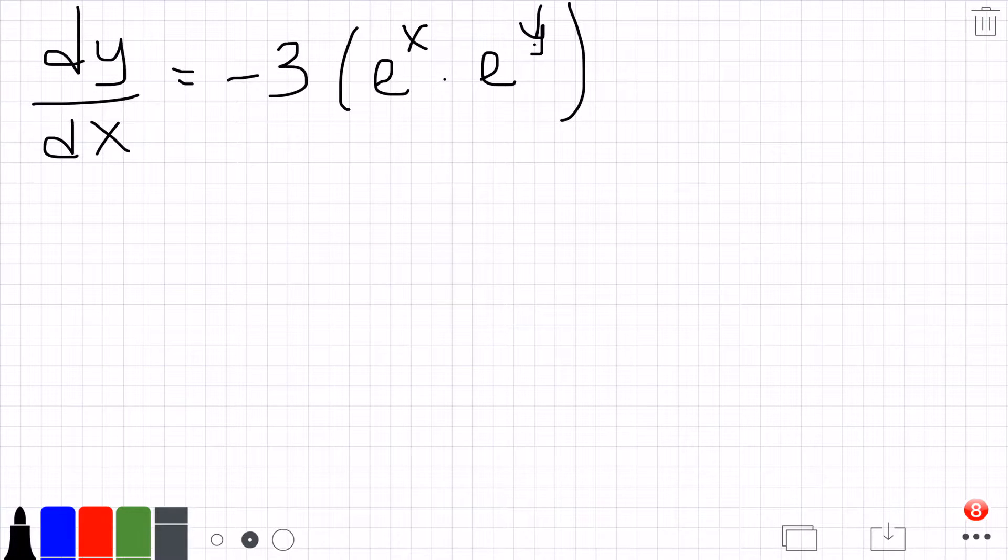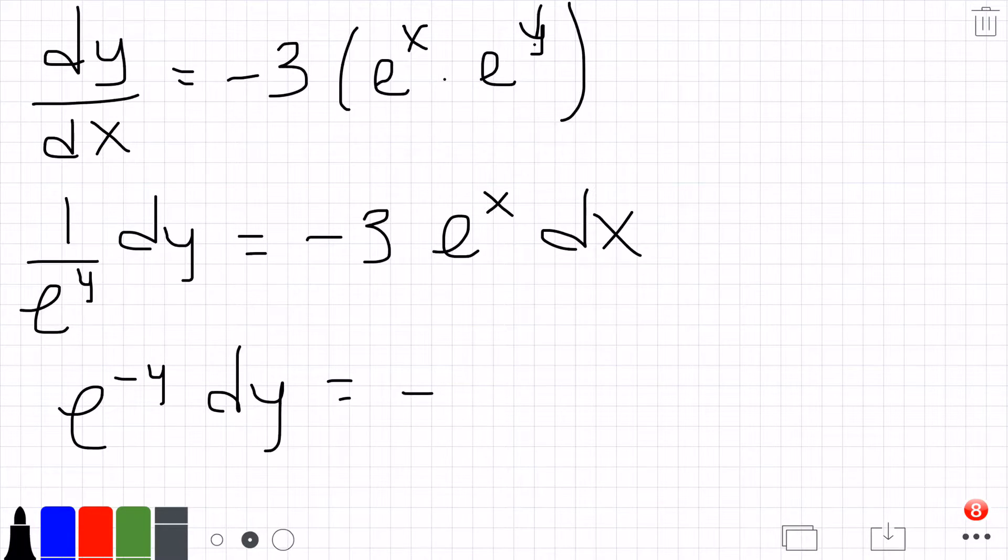Now we want to get all of the x's on one side with the dx and the y's with the dy. So we will get 1 over e to the y dy equals negative 3e to the x dx, or e to the negative y dy equals negative 3e to the x dx.